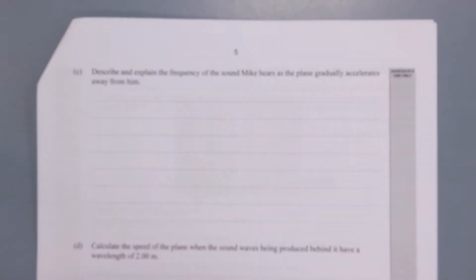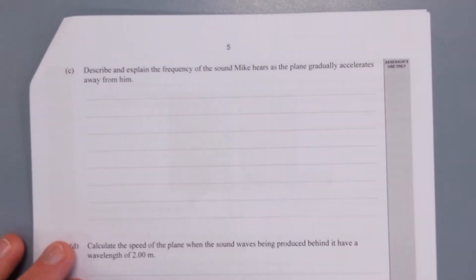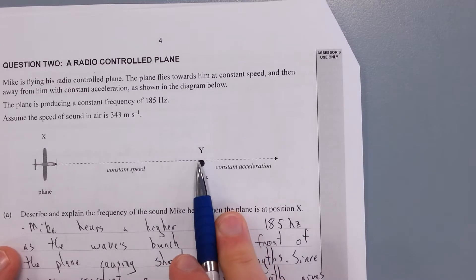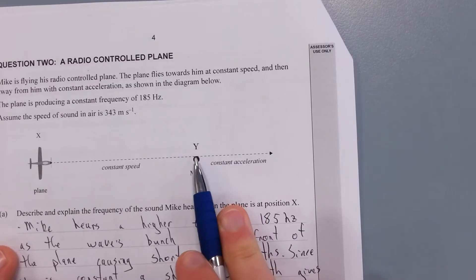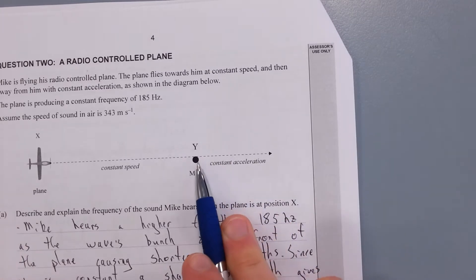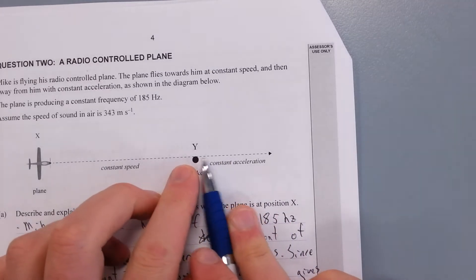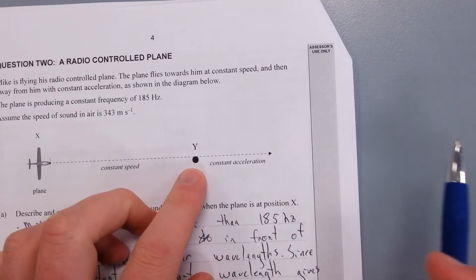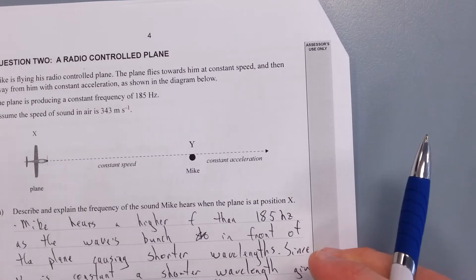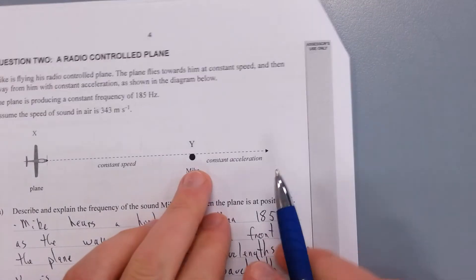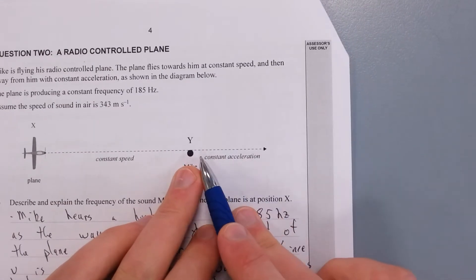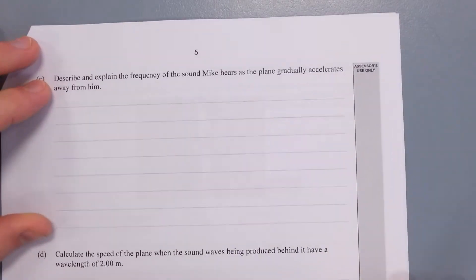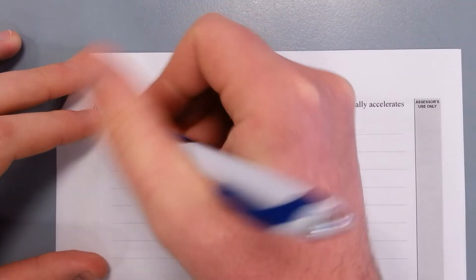Next question. Describe and explain the frequency of sound Mike hears as the plane gradually accelerates away from him. So over here we've got the plane comes towards him with constant speed. And once it gets past him, it starts accelerating. So straight off the bat, once it gets past him, the frequency is going to decrease.